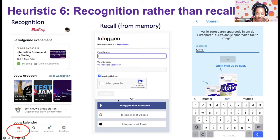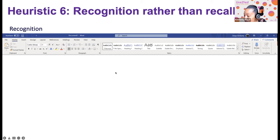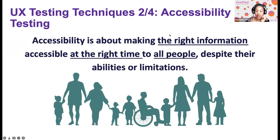Another recognition example: in Microsoft Word, when selecting heading styles you can see what each style will look like before applying it. You don't have to try it out and check — it's shown to you. That was my last usability heuristics example. Now I'll move into accessibility testing, and after this we'll go into breakout rooms.